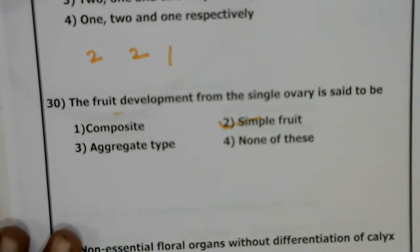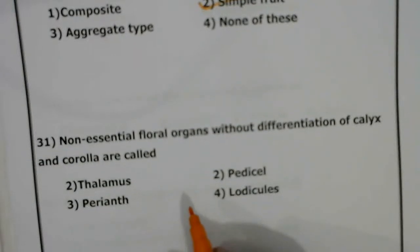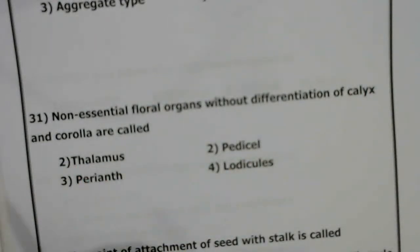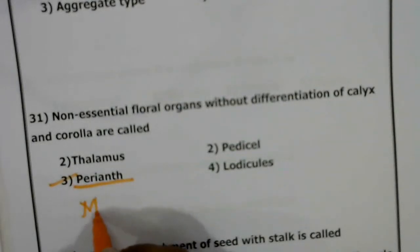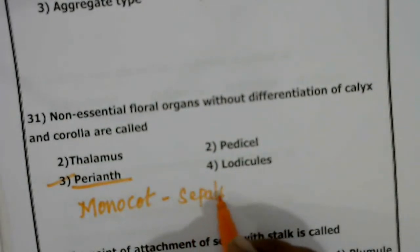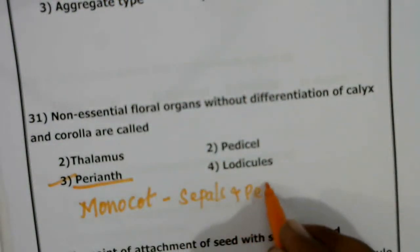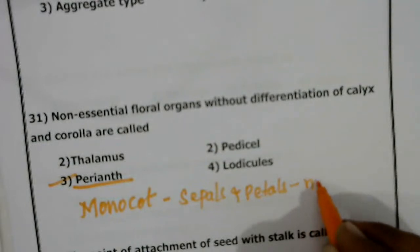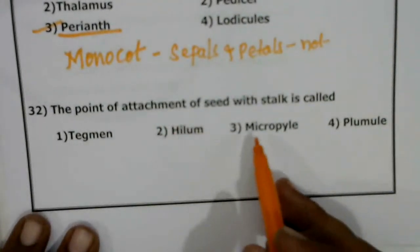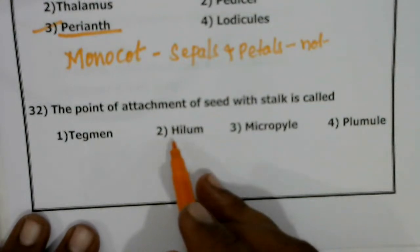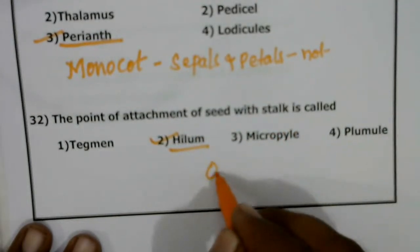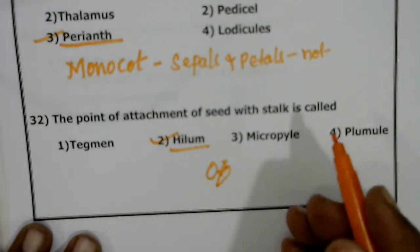Non-essential floral organs without differentiation of calyx and corolla are called perianth. In monocots, the sepals and petals are not differentiated. The point of attachment of seeds with the stalk is called the hilum — this structure connecting the seed to the stalk is called the hilum.